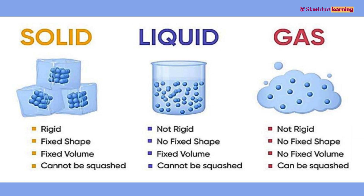Solid is rigid — fixed shape, fixed volume, cannot be squashed. Liquid is not rigid — no fixed shape, but fixed volume, cannot be squashed. Gas is not rigid — no fixed shape, no fixed volume, can be squashed.